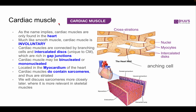Cardiac muscle sits between smooth and skeletal in terms of complexity. As the name implies, cardiac muscle is only found in the heart. Much like smooth muscle, cardiac muscle is involuntary — not under voluntary control, which is appropriate since you would forget to control it and die. Cardiac muscles are connected by branching cells and unique structures known as intercalated discs.